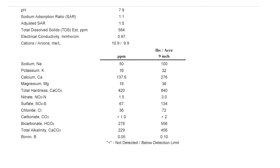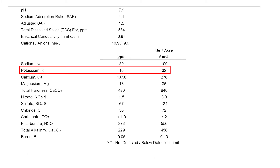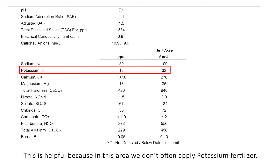We are also getting a little bit of potassium out of the water at 16 parts per million, so we're putting on about 32 pounds of potassium per year. That's great given that often we don't have a lot of K fertilizer going on our fields, so we're continuing to keep our potassium fertility high.